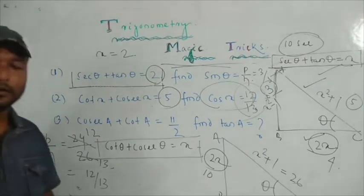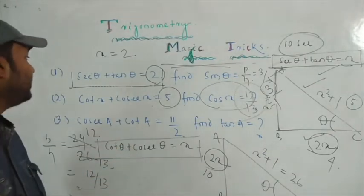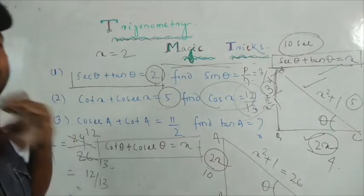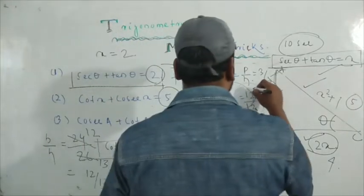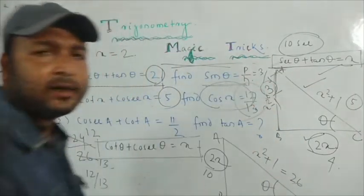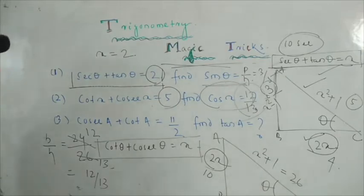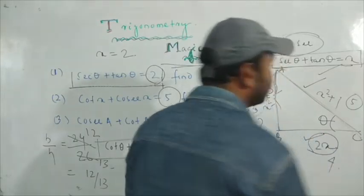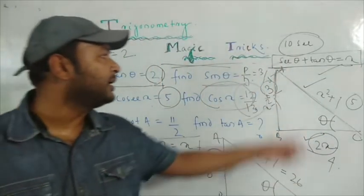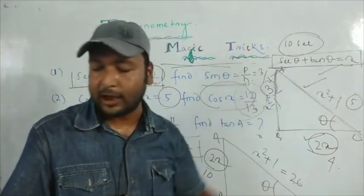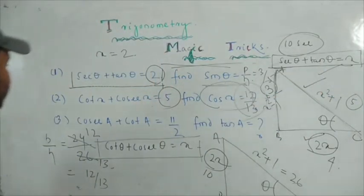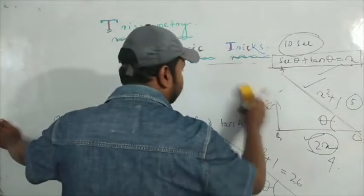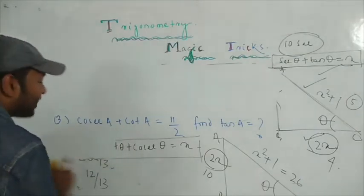Is it simple or not? If you solve it by a normal process it is a lengthy, time-consuming process, but by this shortcut method you can find sin θ, cos θ, tan θ, cosec θ, and all the trigonometric functions using this trick and this format.